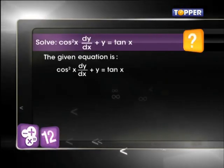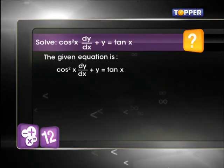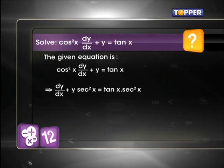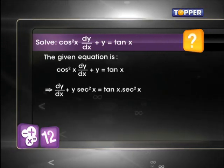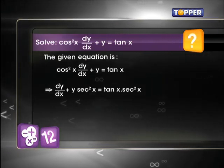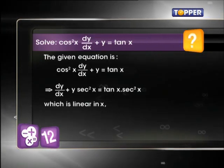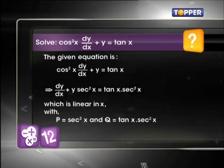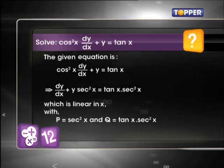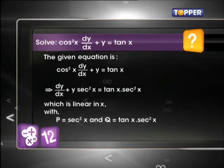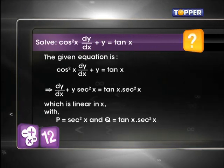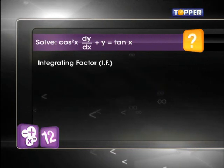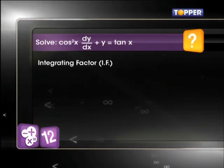On dividing the whole equation by cos²x, we get dy/dx + y sec²x = tan x sec²x. This is a linear differential equation in x where p = sec²x and q = tan x sec²x. First we find the integrating factor which is e to the power ∫p dx.